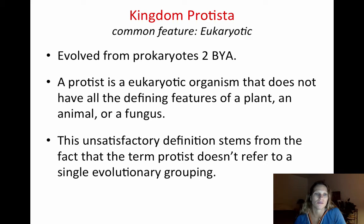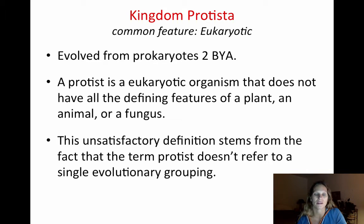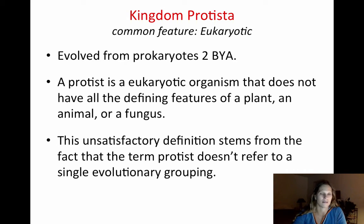The term 'protist' doesn't really indicate one single evolutionary grouping, which is how we like to do things — we like to group things by commonality. We can't really do that with the protists because they're too broad. What really distinguishes protists from the rest of the eukaryotes is the nucleus, but that's more or less it. Not all protists share a common ancestor, which is confusing.